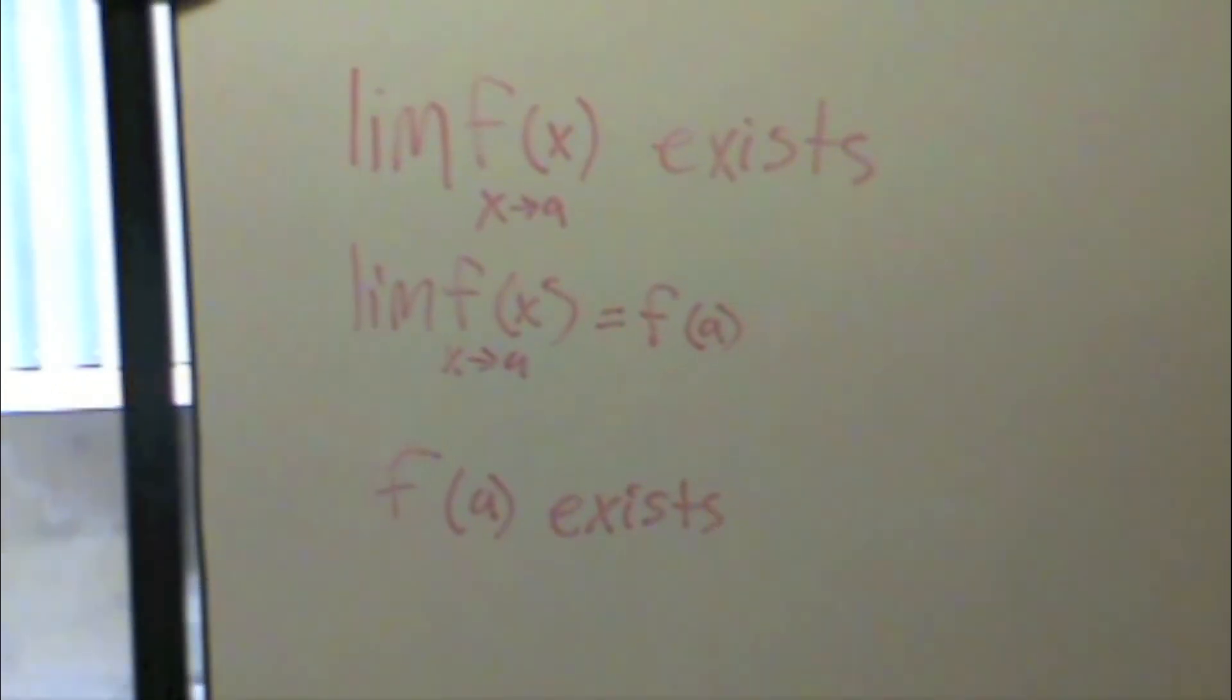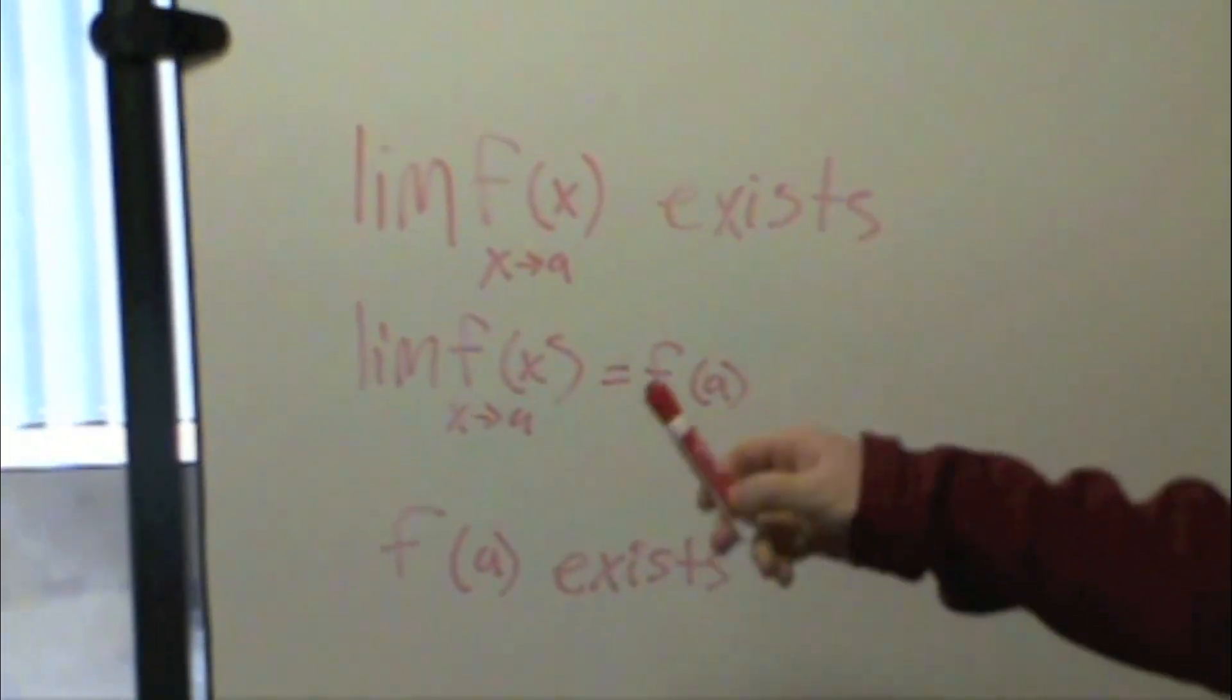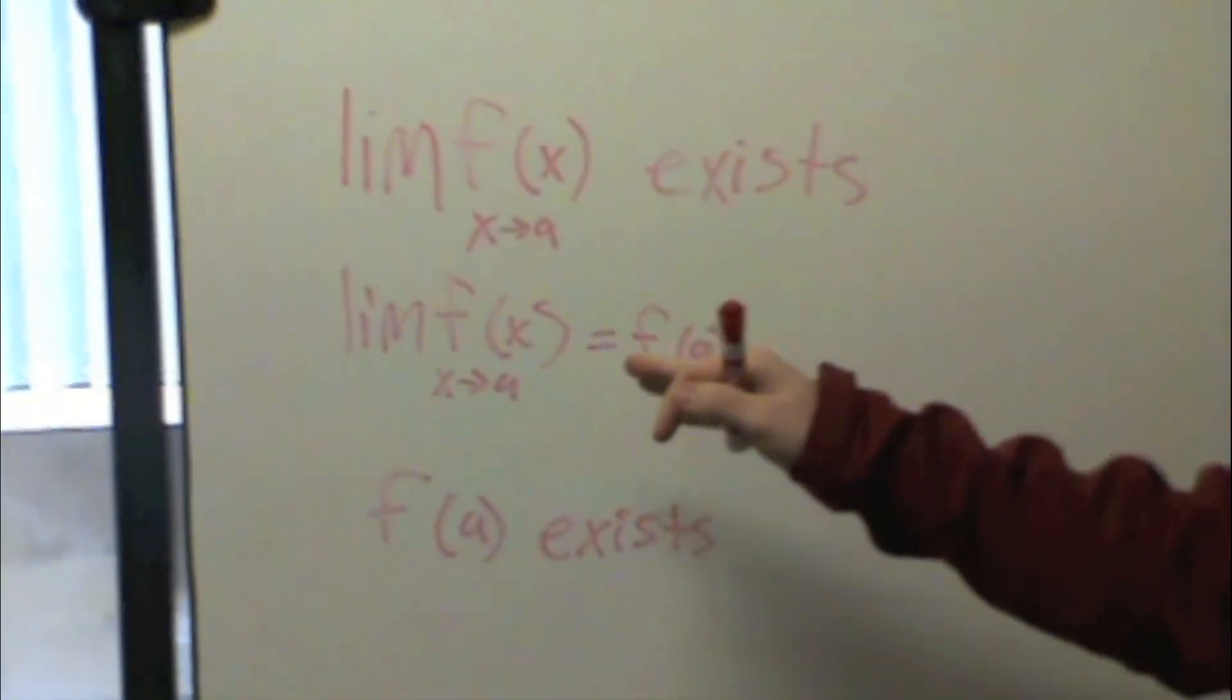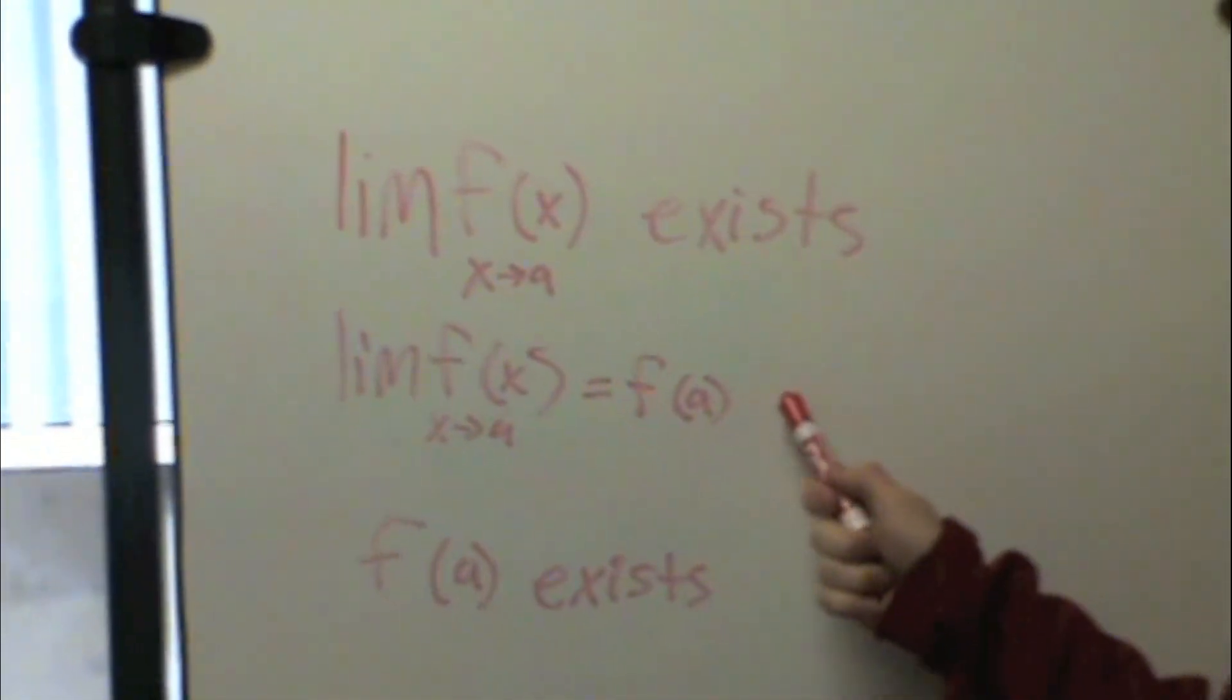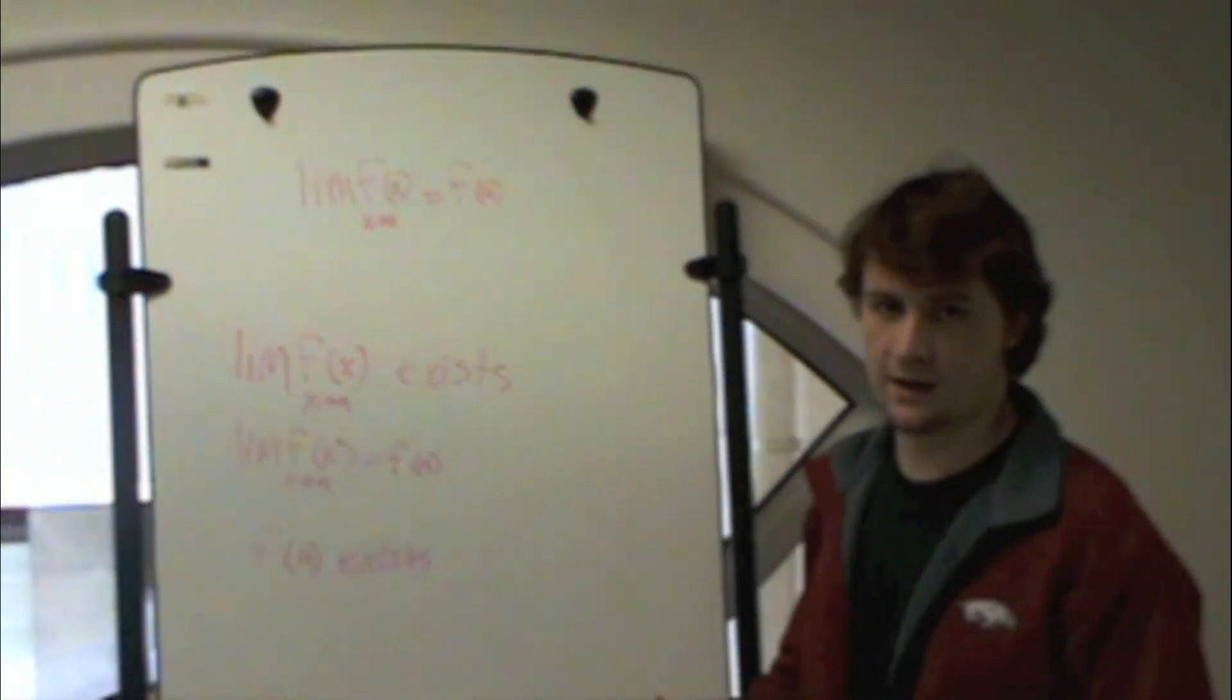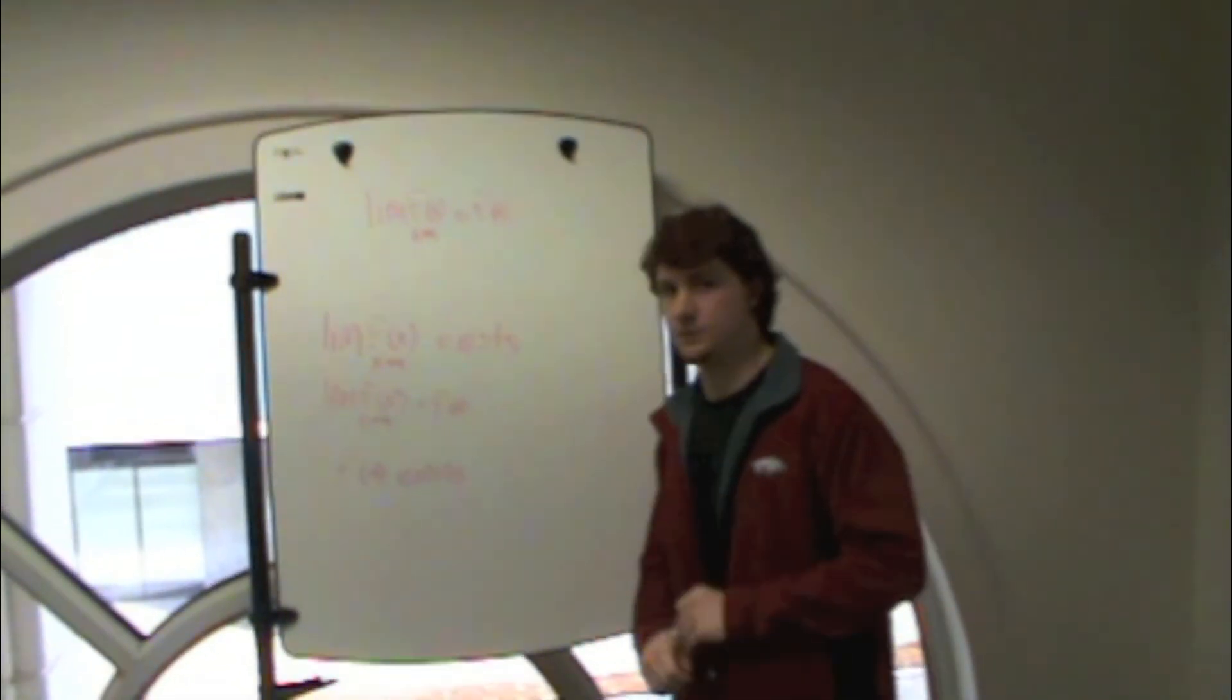f of a has to exist also, and the limit of f of x as x approaches a has to equal f of a. So if you get anything out of this video, it is those three rules.